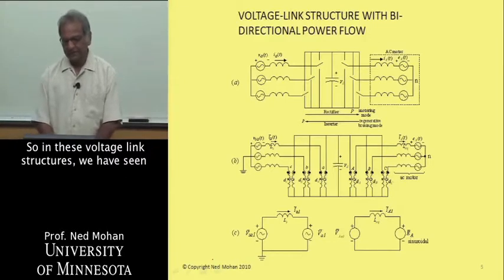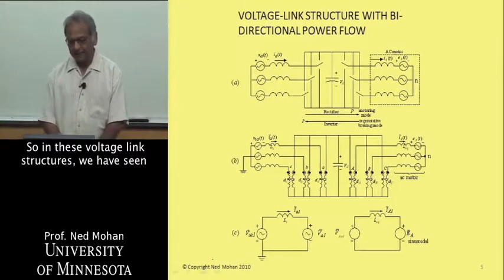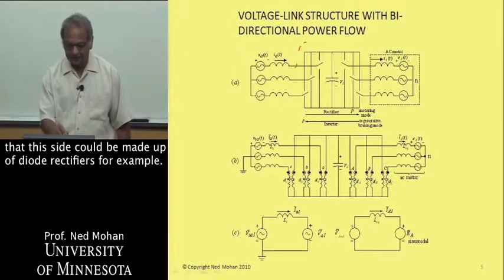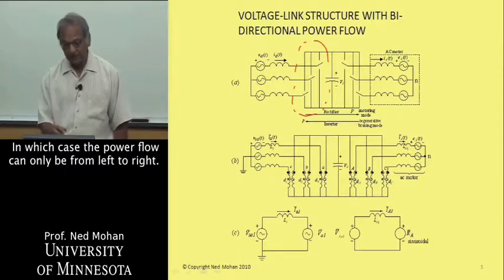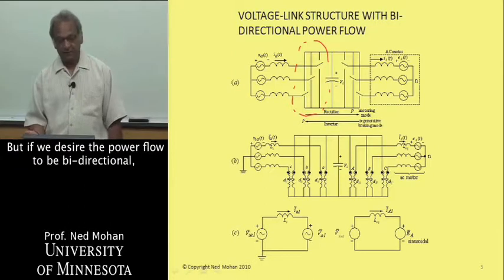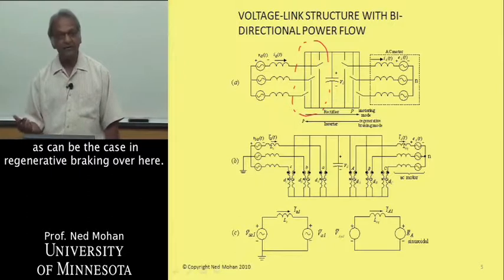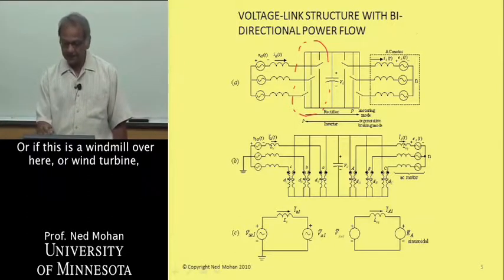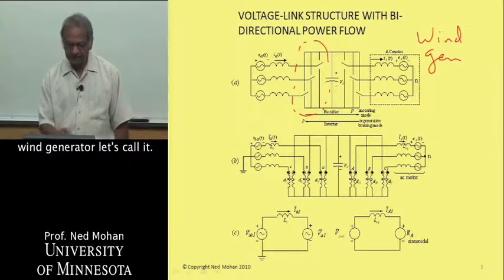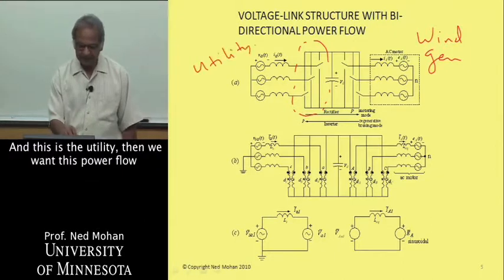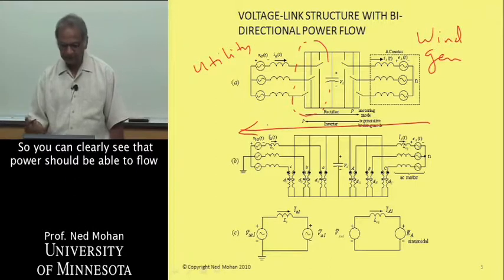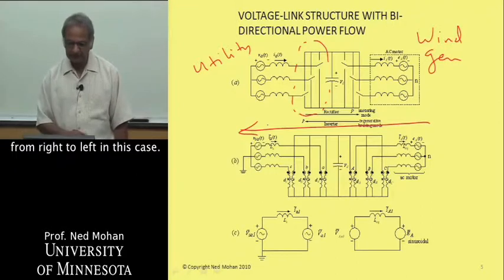In these voltage link structures, we have seen that this side could be made up of diode rectifiers, in which case the power flow can only be from left to right. But if we desire the power flow to be bidirectional, as can be the case in regenerative braking, or if this is a wind turbine, or wind generator, and this is the utility, then we want this power flow to be this way here. You can clearly see that power should be able to flow from right to left in this case.